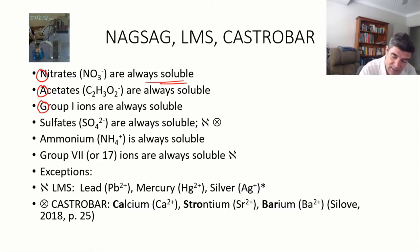Acetates, that's the ion that has two carbons, a double bonded oxygen and an O-minus, which is the anion of acetic acid or ethanoic acid. They're always soluble, and the group 1 ions are always soluble, so that's sodium, lithium, potassium, etc.